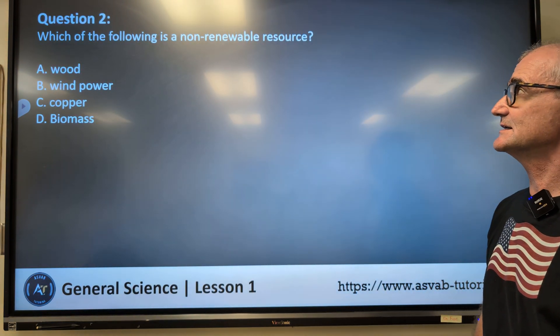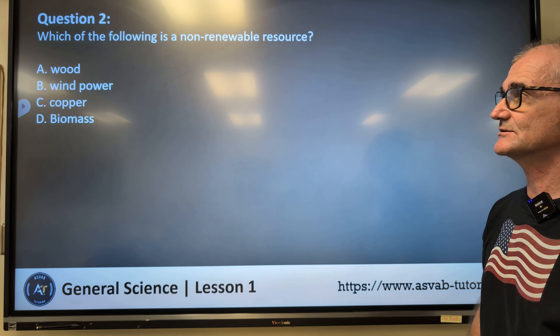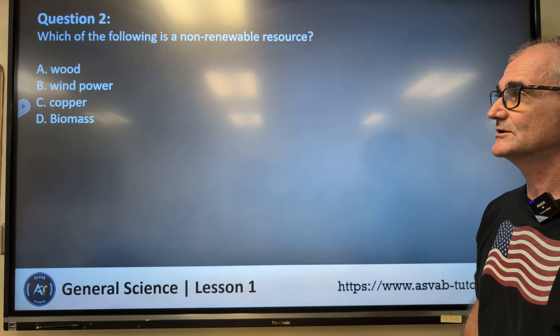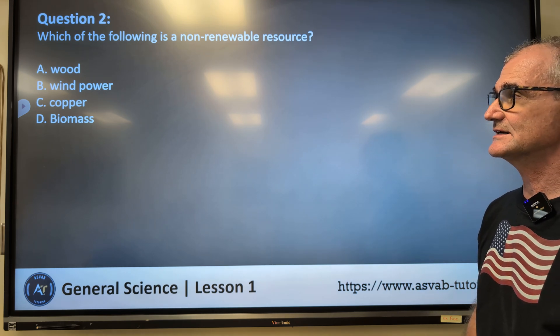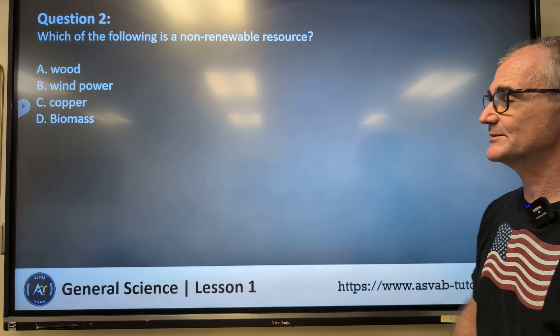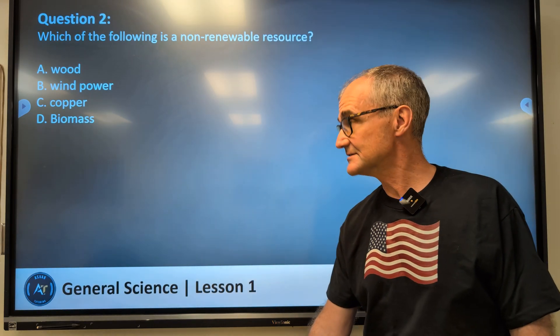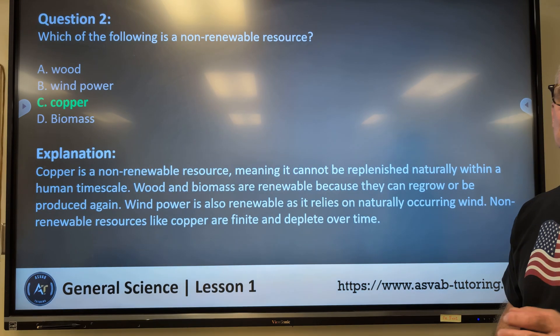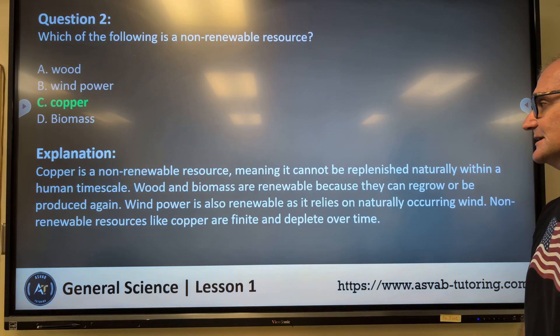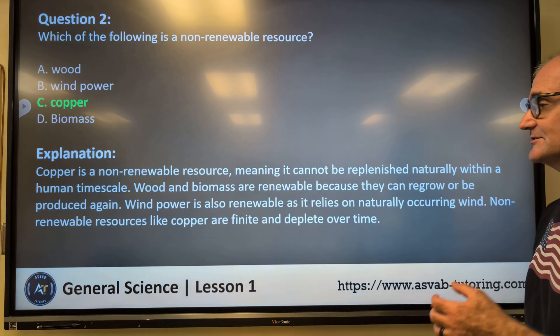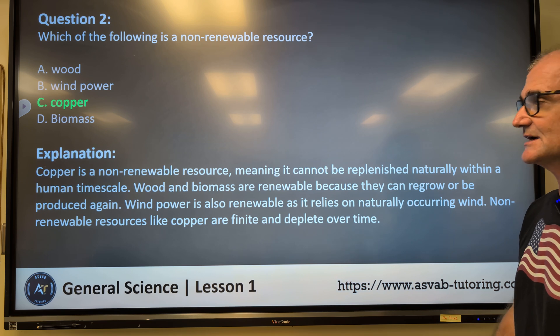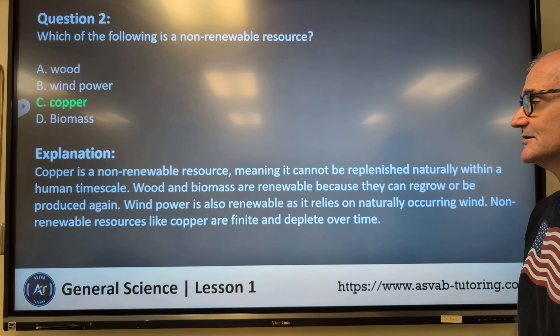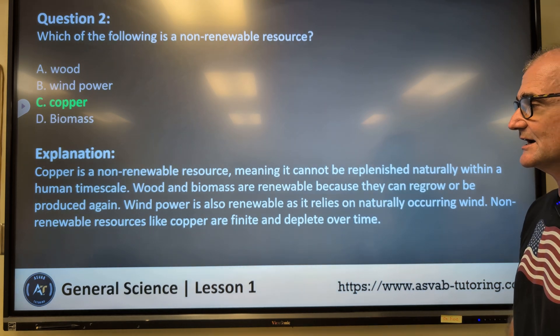Which of the following is a non-renewable resource? A, wood. B, wind power. C, copper. D, biomass. Correct answer C, copper. Copper is a non-renewable resource, meaning it cannot be replenished naturally within a human time scale. Wood and biomass are renewable because they can regrow over time. Wind power is also a renewable resource.